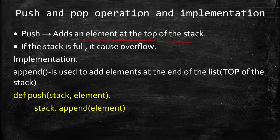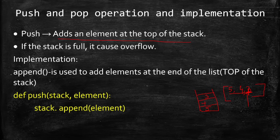For implementation: consider the stack as a Python list. Whatever you add stores in the list — for example, adding 5, 4, 3 means 5 is at index 0 and 3 is the last element, which is the top. To add an element, use the append function. Append adds the element at the end of the list, which represents the top of the stack.